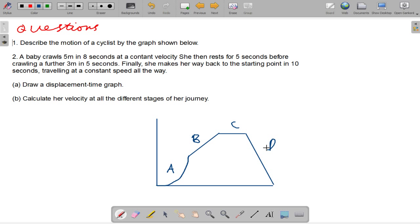Finally, she makes her way back to the starting point in 10 seconds, traveling at a constant speed all the way. Draw a displacement-time graph and calculate her velocity at all the different stages of the journey. So I'll give you a 5-second pause and we'll go through the answers.